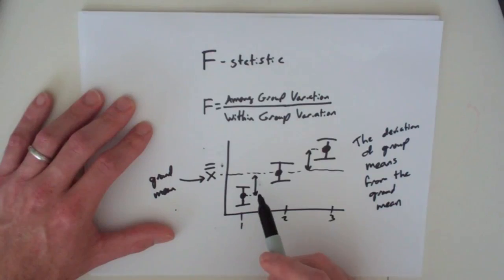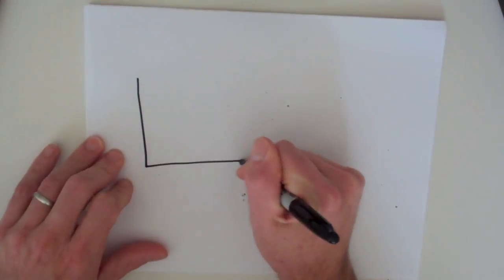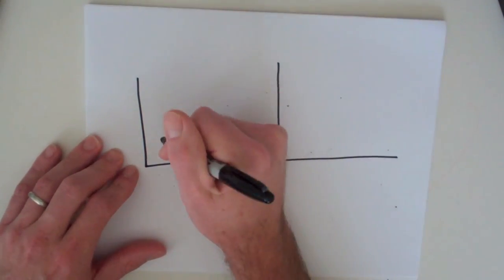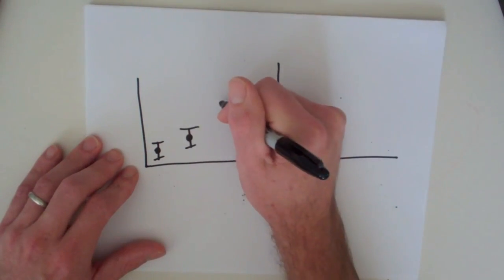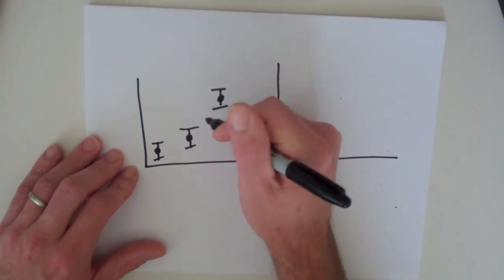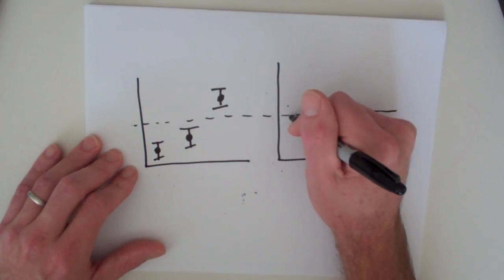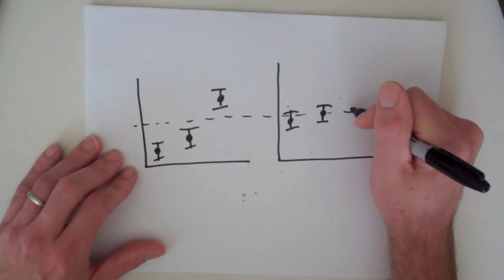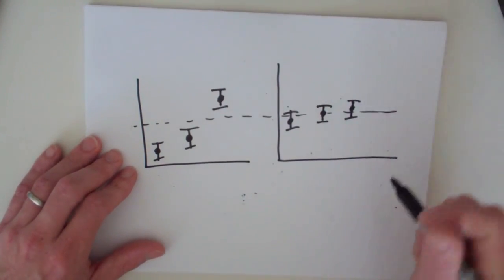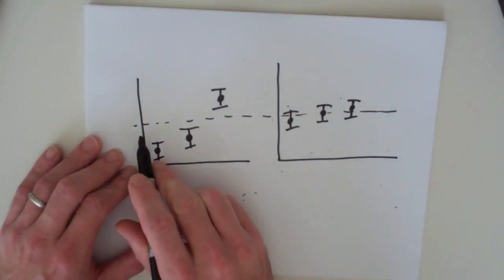This is your among group variation. Let's just explore that very quickly. If you have two plots here, we're going to have three groups in each. And here's our grand mean. Here are another three groups that share the same grand mean, which is going to have a higher among group variation?